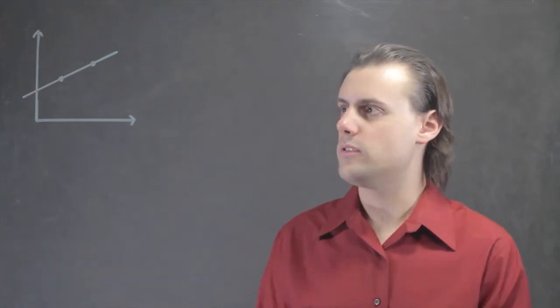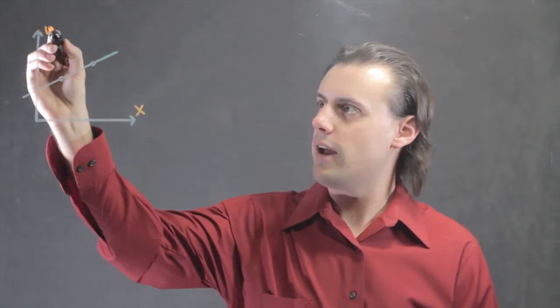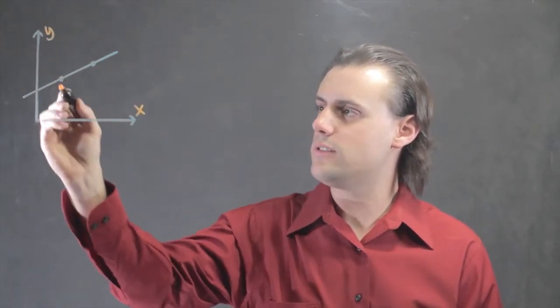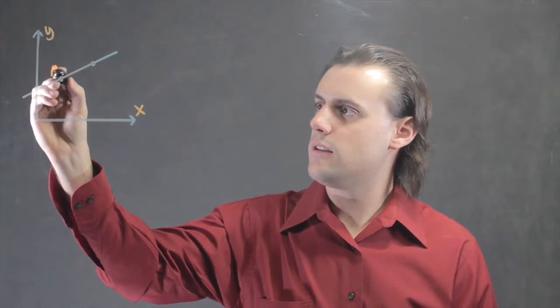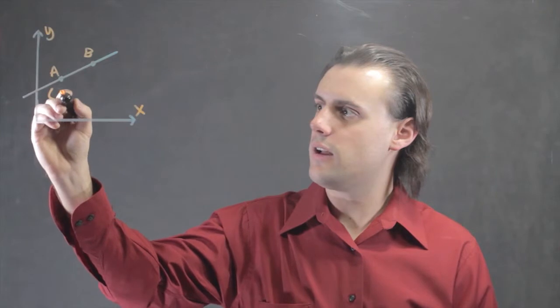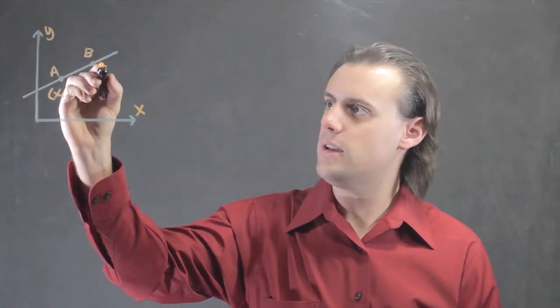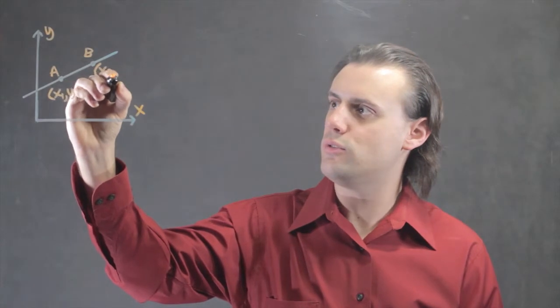So, say we're given two points in this coordinate frame, where I have my x and y axes, and let's label these two points A and B, where A has coordinate x1, y1, and B has coordinate x2, y2.